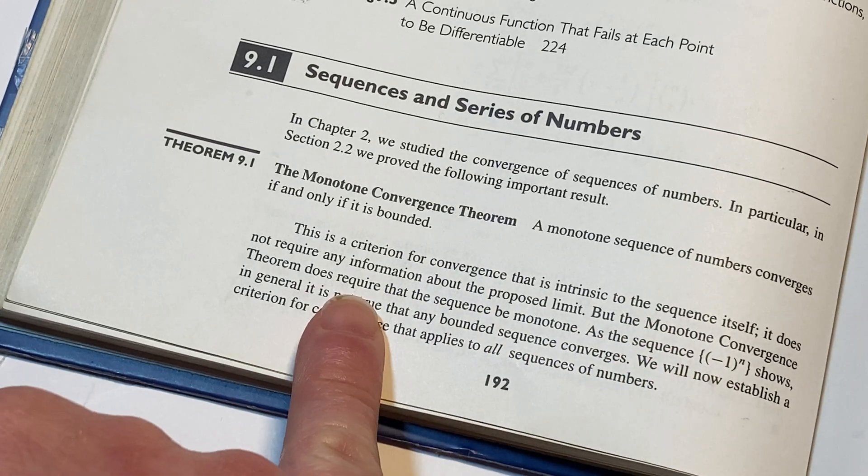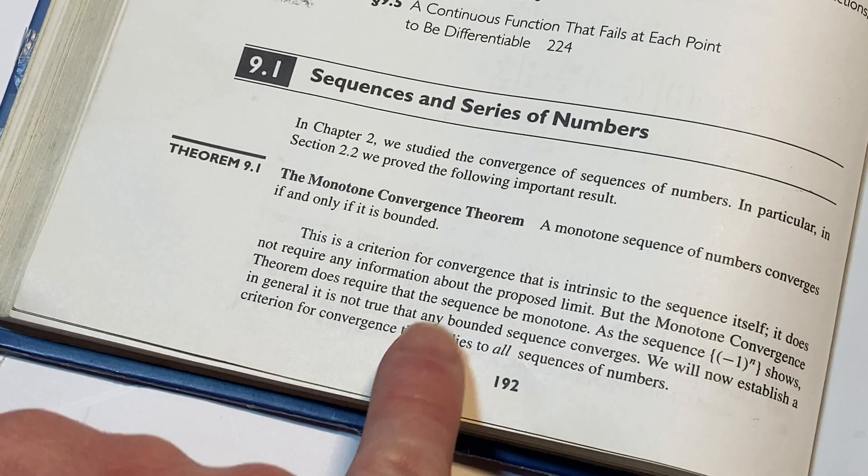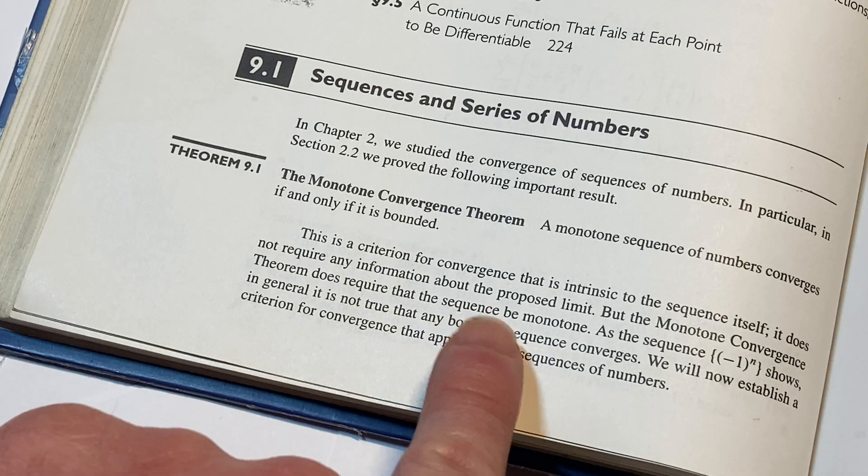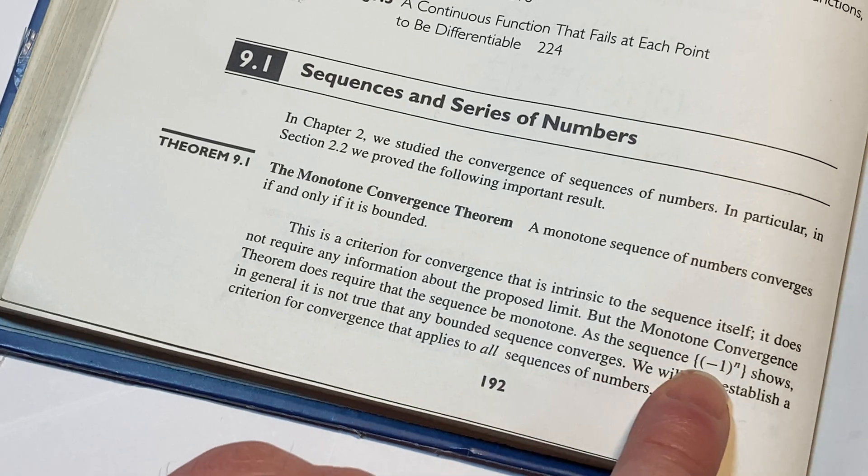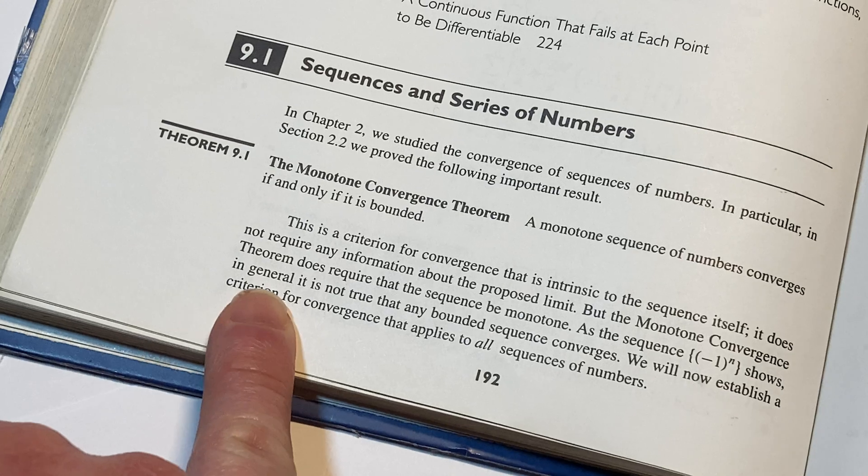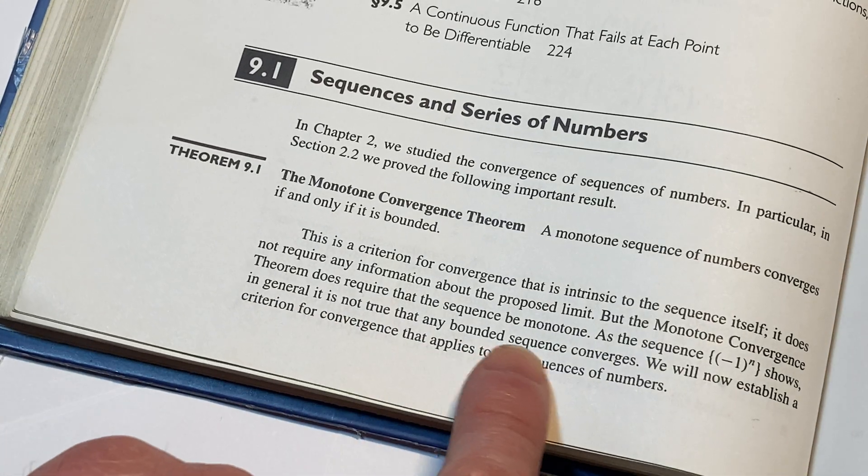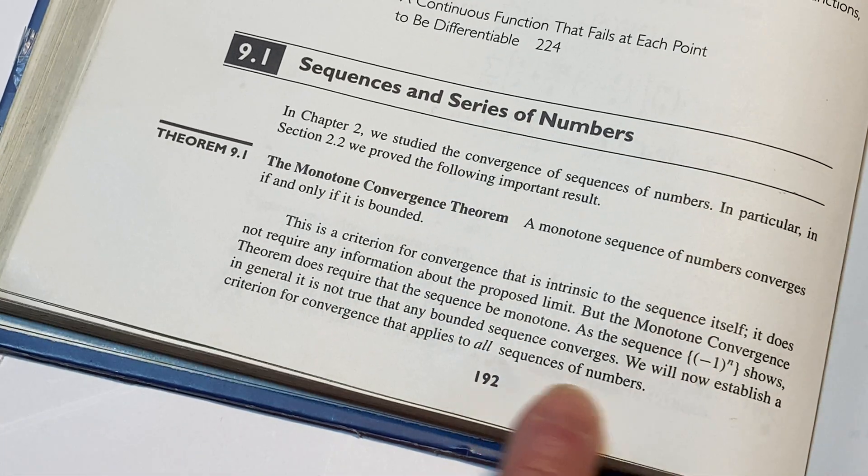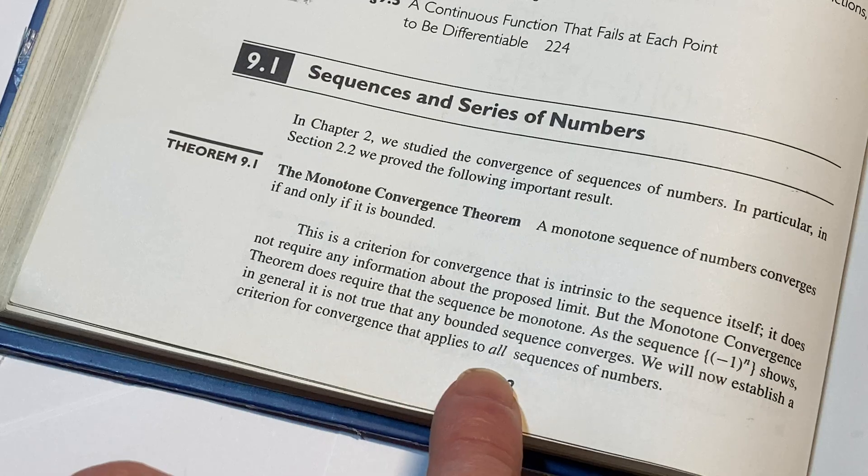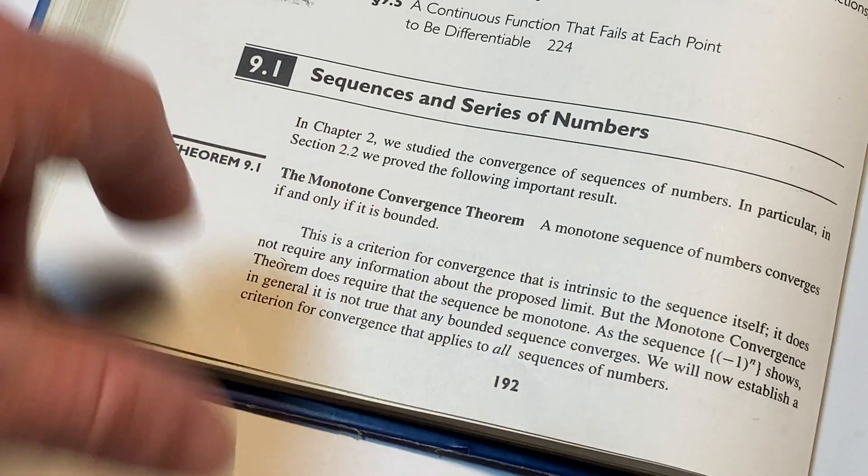But the Monotone Convergence Theorem does require that the sequence be monotone. As the sequence negative 1 to the n shows, which is bounded, in general, it is not true that any bounded sequence converges. We will now establish a criterion for convergence that applies to all sequences of numbers.